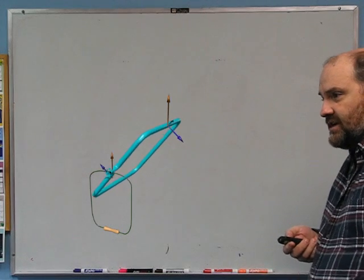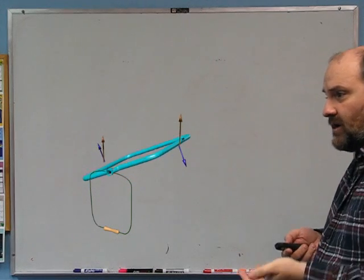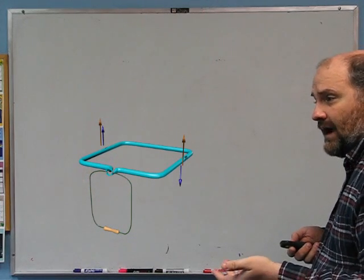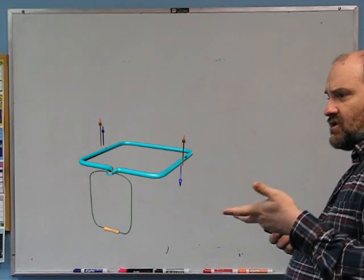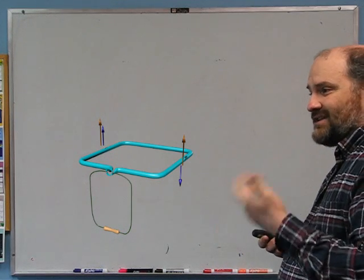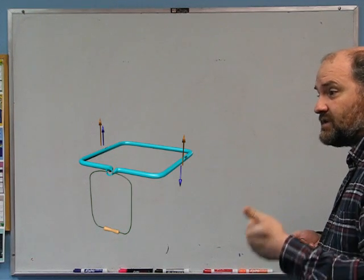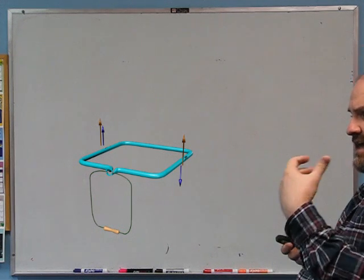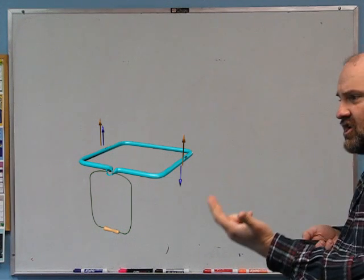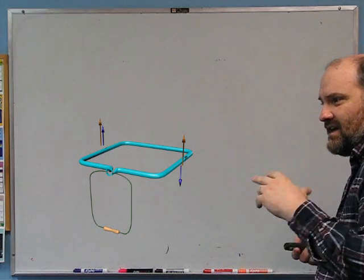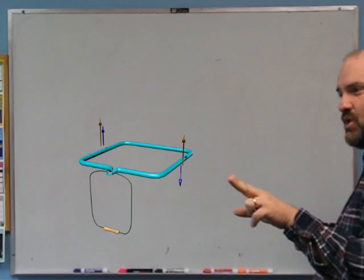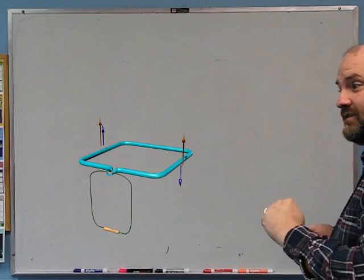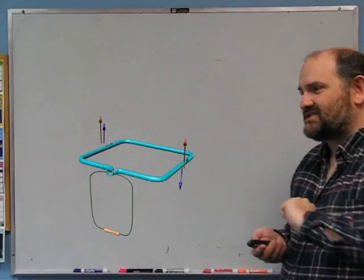There are free charges that can move within the metal, and as the legs of the loop move around — shown by the darker blue arrows — the charges are carried in that direction as well. Because a magnetic field exerts a force on moving charges, these charges will have a force on them. If that force has any component along the direction of the wire, it will result in charges moving along the wire, which is a current.